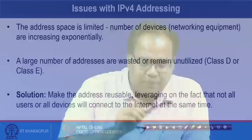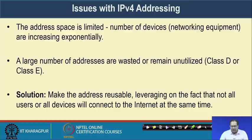Device count has increased quite a few hundred fold from the time when IP was first introduced. Furthermore, the number of IP addresses we actually require is not equal to the number of devices — many devices have multiple network interfaces, and we require one IP address for every individual interface. Because of that we require even more IP addresses from the available address space. That is the major problem: the address space is limited while networking equipment is increasing exponentially, and large numbers of addresses from class D and class E remain wasted or underutilized.